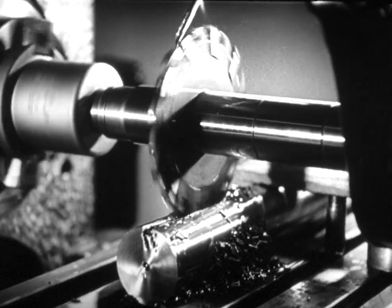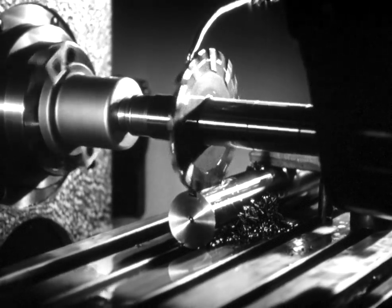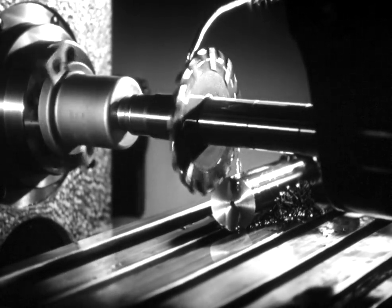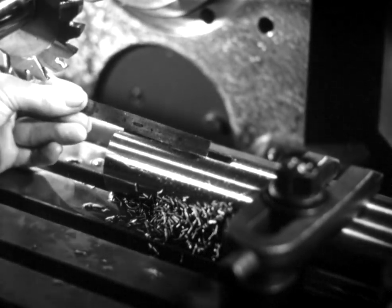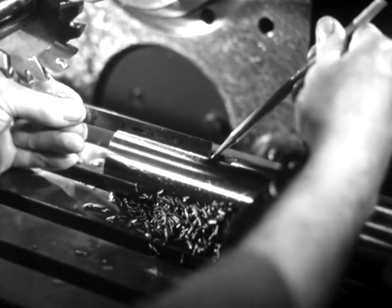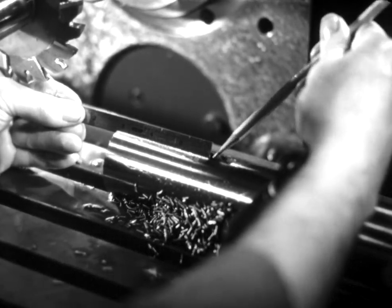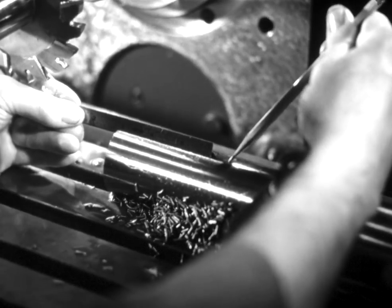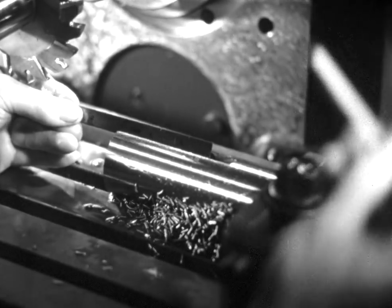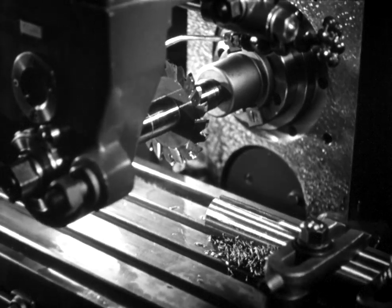After running the table back, stop the machine before doing any checking, then check the length of the keyway. Note that the reading is taken to the end of the flat, and that the radius formed by the cutter in leaving the work is not considered as part of the length.